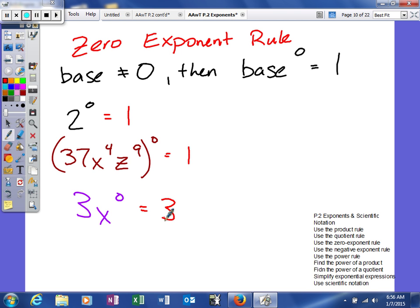So, it still remains that anything to the zero power is one. So, we will get x to the zero power is one, but the coefficient of that is three. So, three times one, that will actually simplify down to three. So, the zero exponent rule. Thank you.